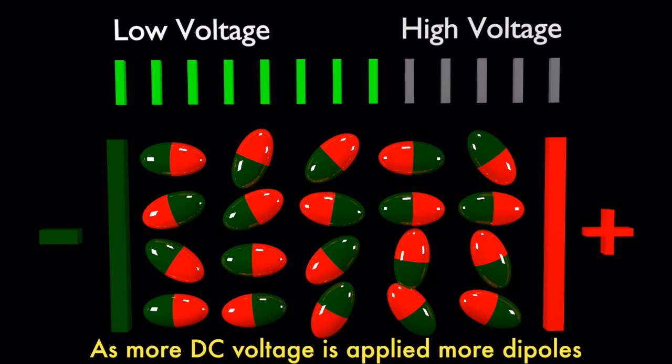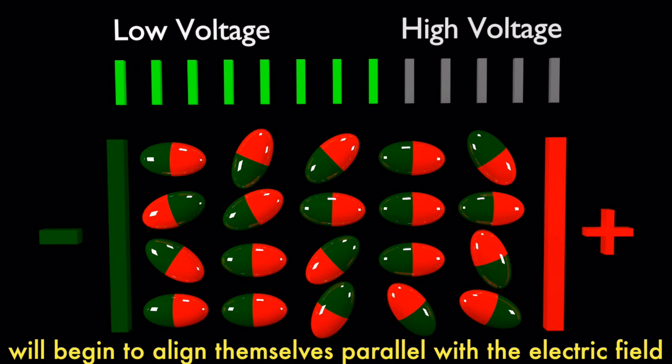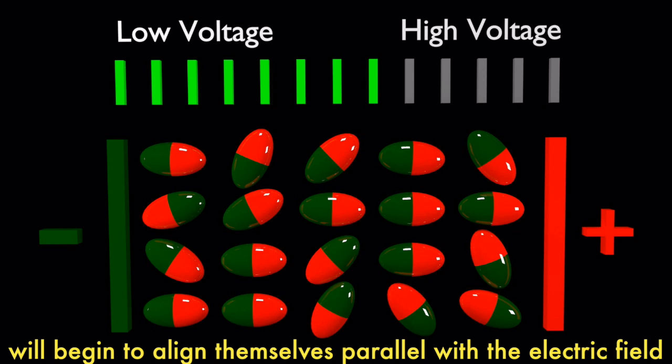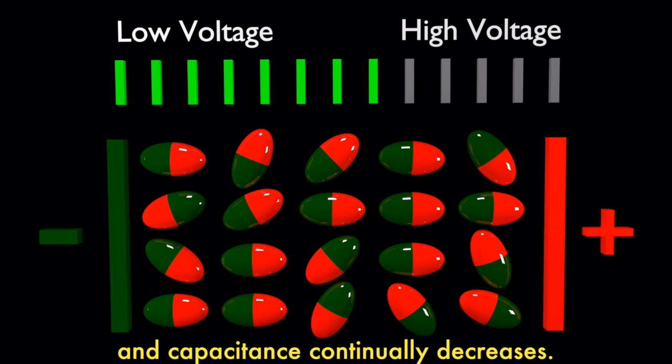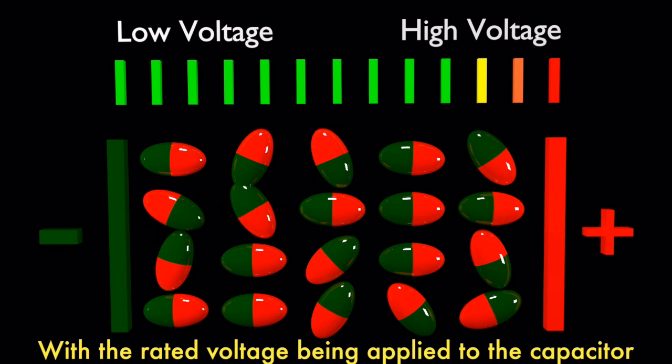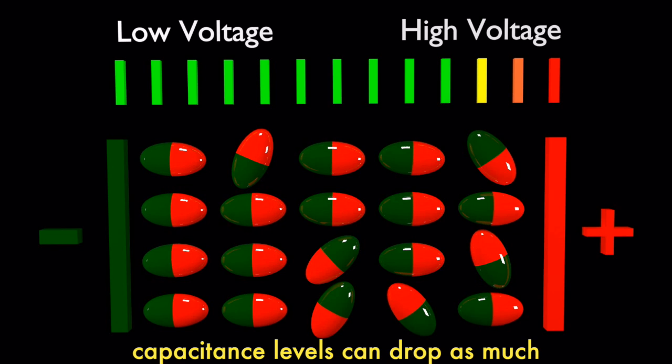As more DC voltage is applied, more dipoles will begin to align themselves parallel with the electric field and capacitance continually decreases. With the rated voltage being applied to the capacitor, capacitance levels can drop as much as 70 percent from their nominal capacitance.